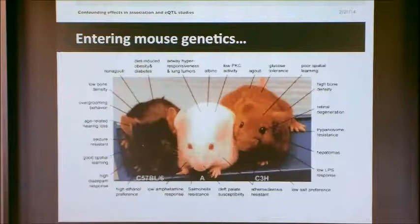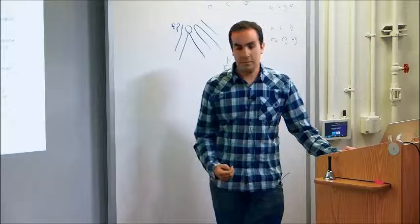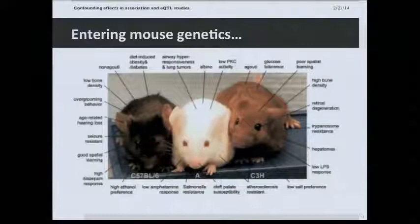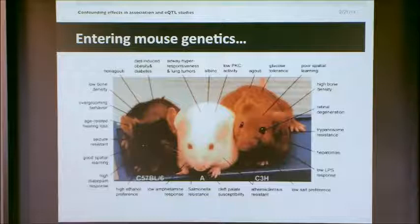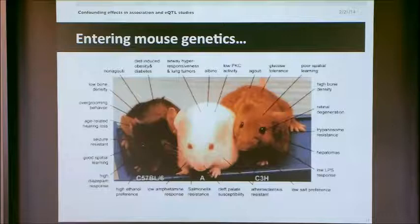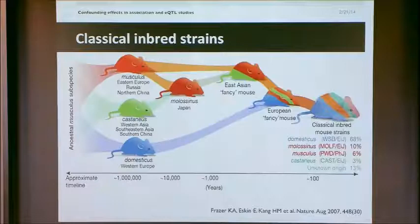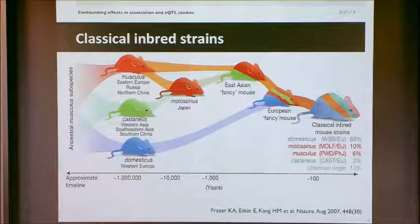I'm going to give you an anecdote in mouse genetics to illustrate where problems come with these unmodeled factors. I work a lot in mouse genetics. Most medical mouse genetics looks at inbred strains of mice — not from a natural population, they've been inbred. We were involved in a study in 2007 looking at the genetic diversity of these mice in an early sequencing study, and this figure summarizes a high-level overview of the history of these mice.